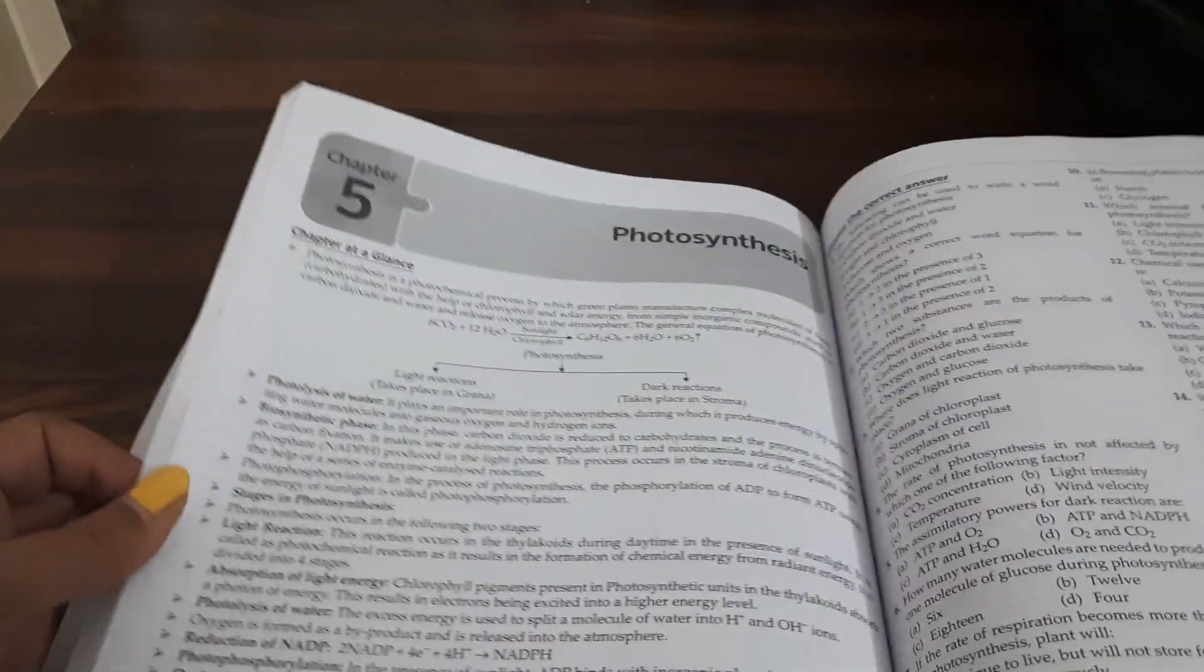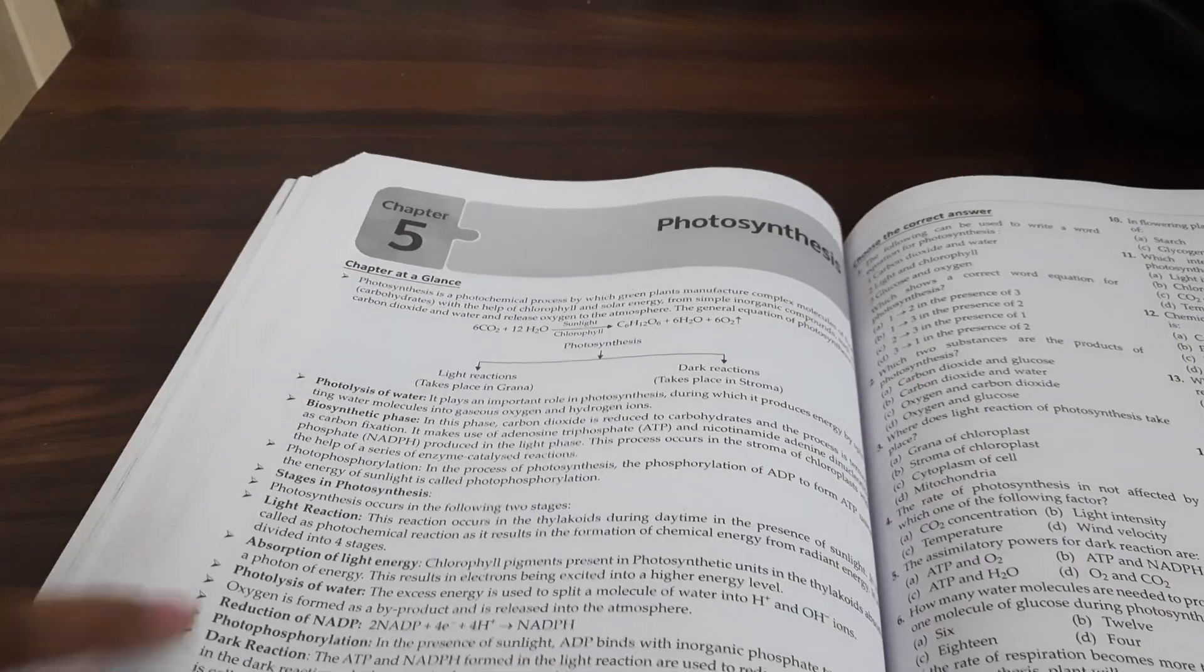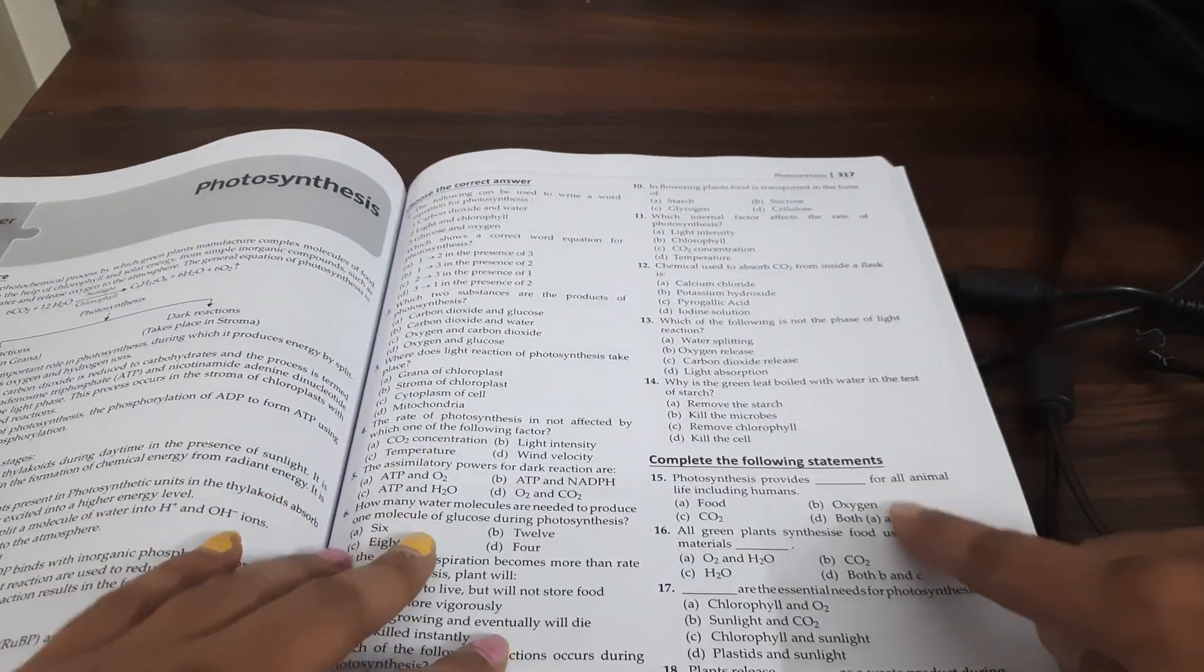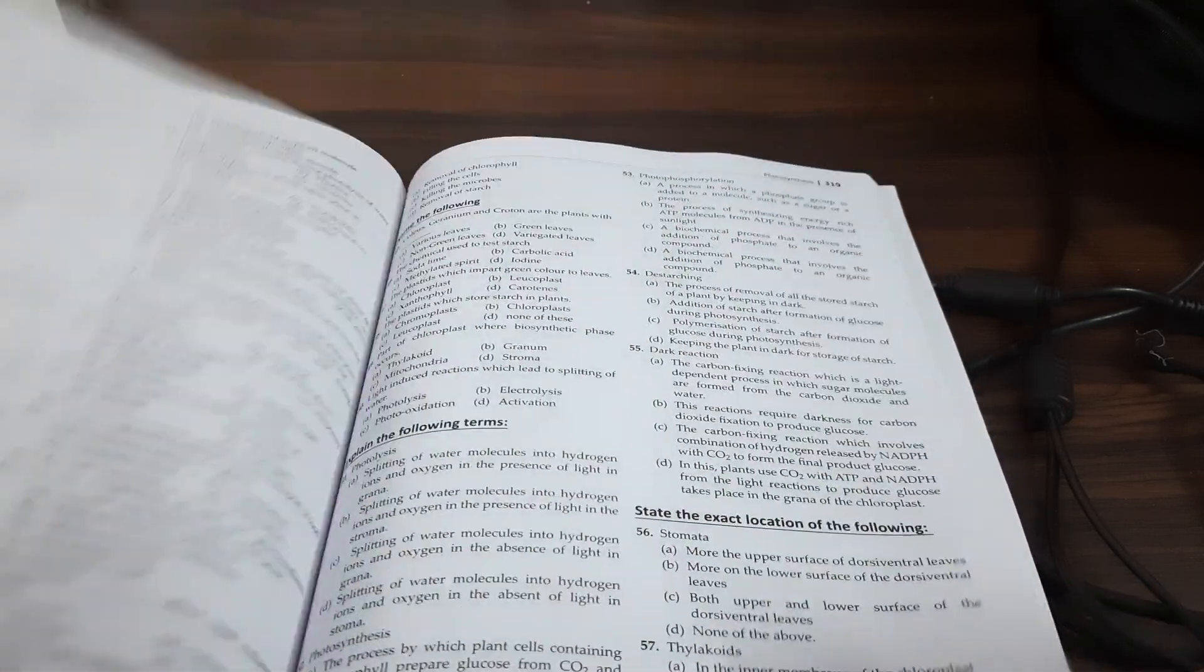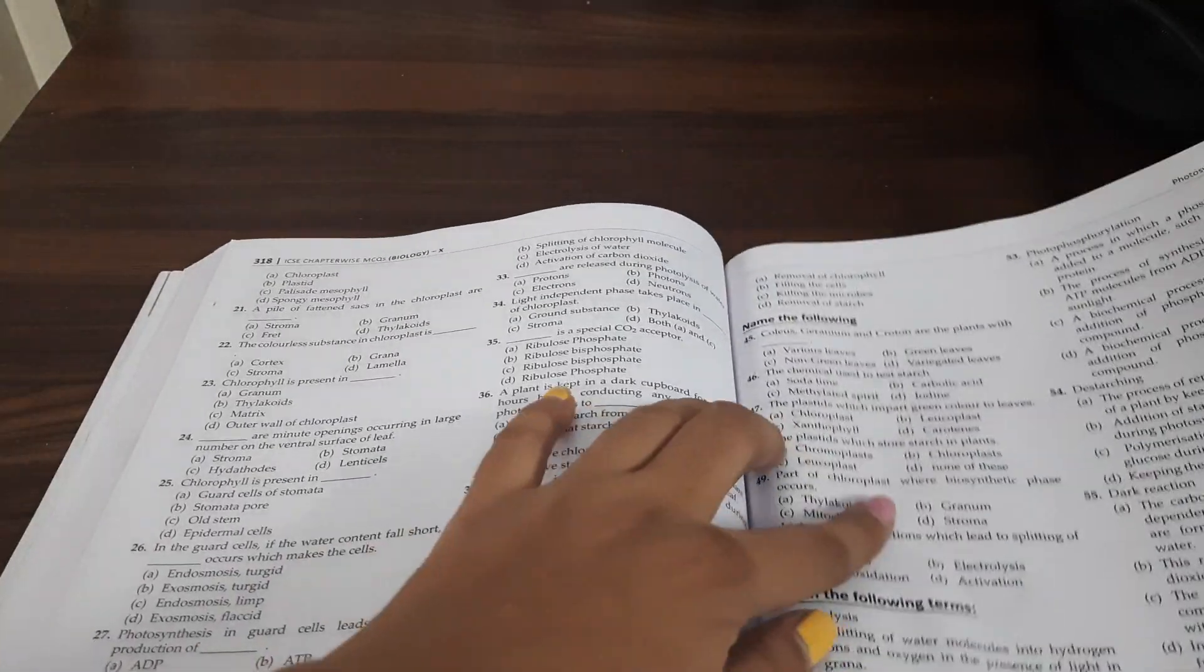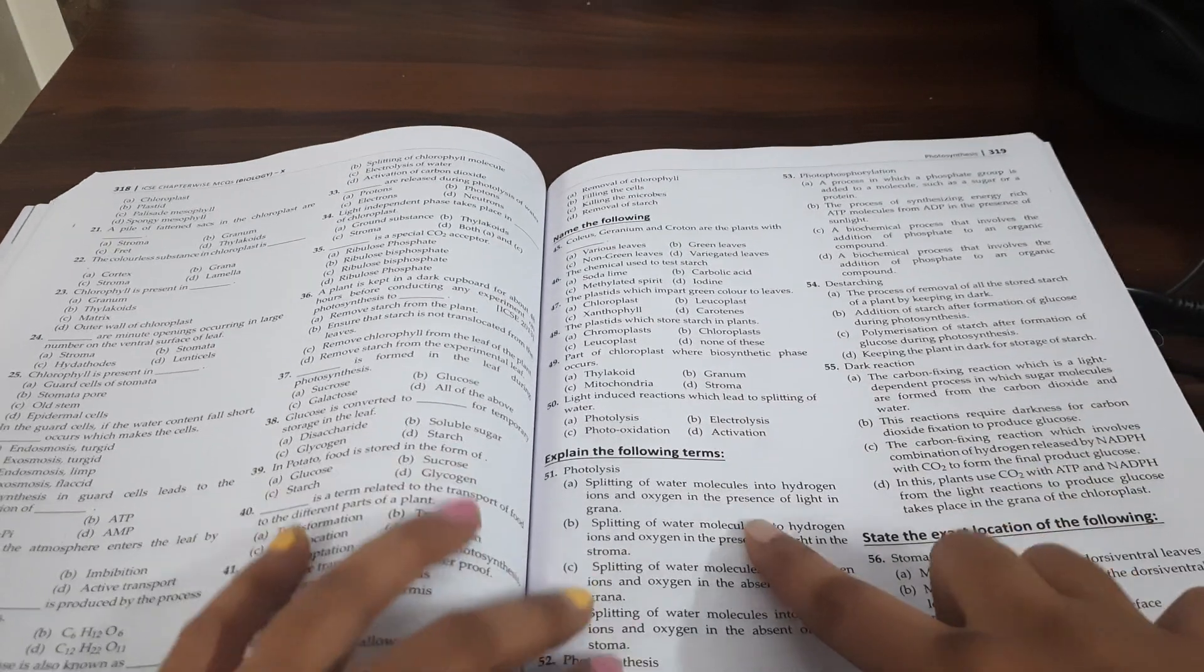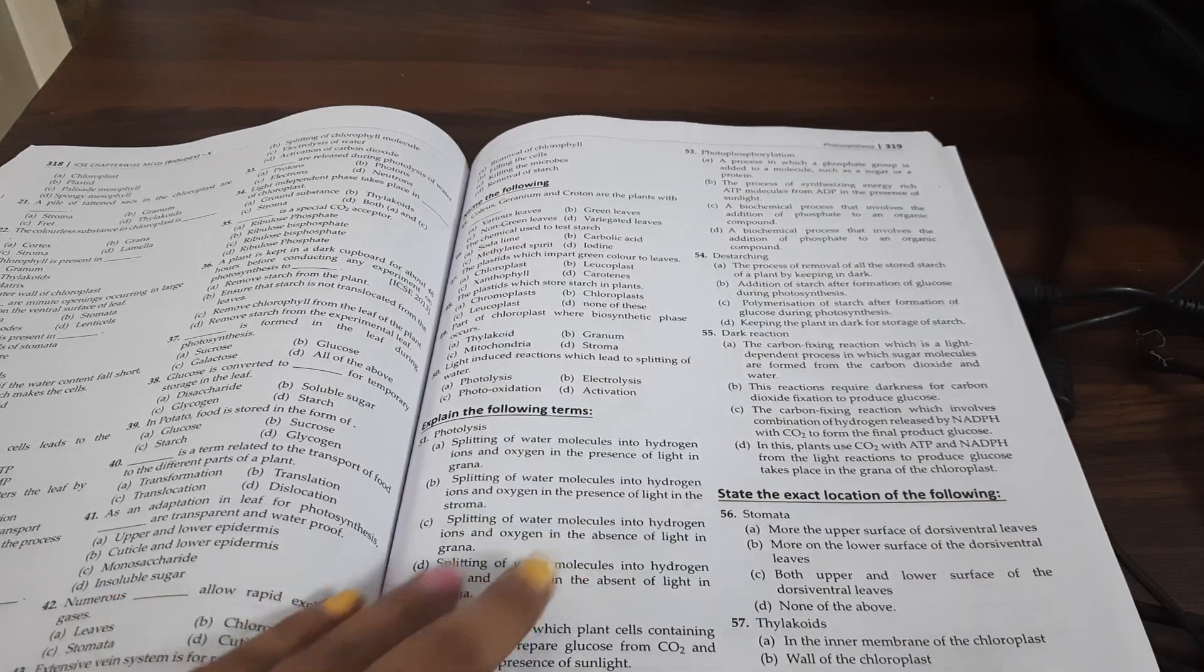Now, let's go for Biology. For example, let's open up Photosynthesis. Again, you can see chapter at glance is given. All the pointers are given first. Then, choose the correct answer type questions. Complete the following statement type of questions. Then, you see, name the following type of questions with MCQ. Explain the following terms. State the exact location of the following.